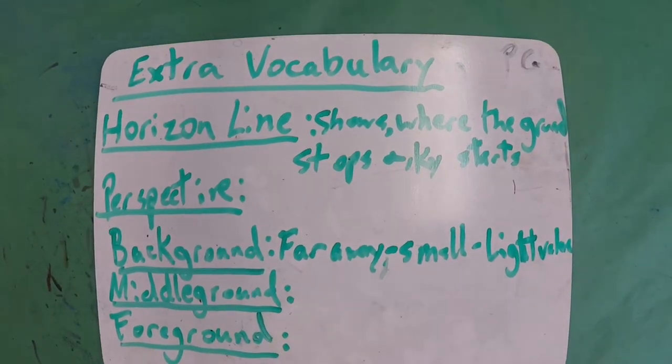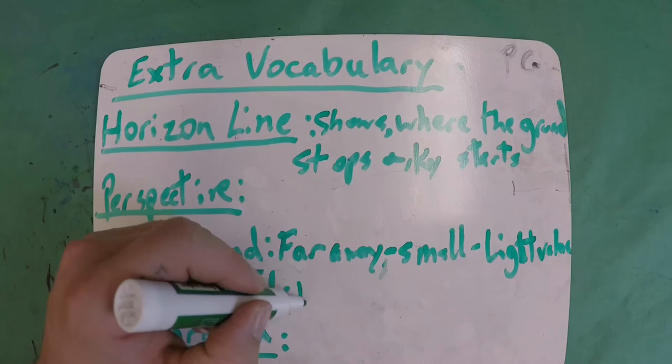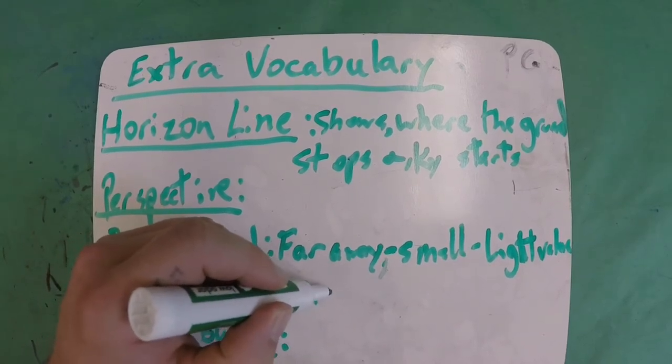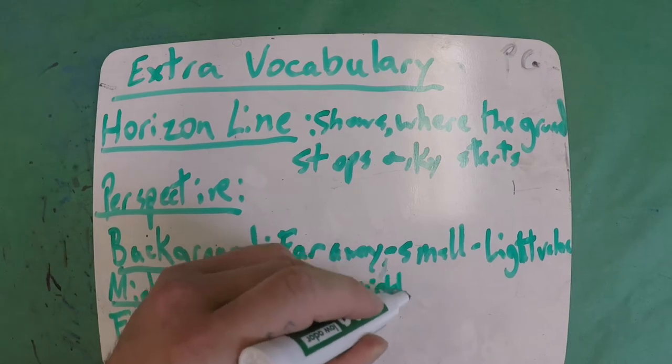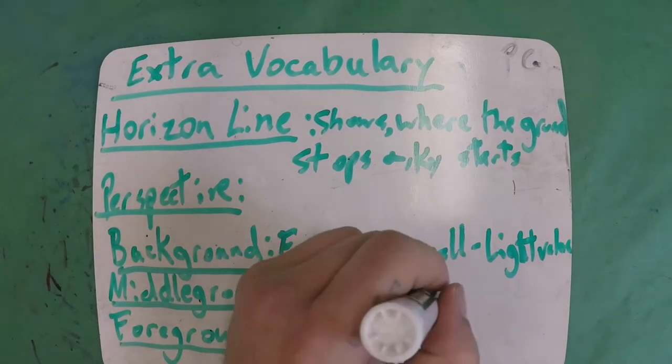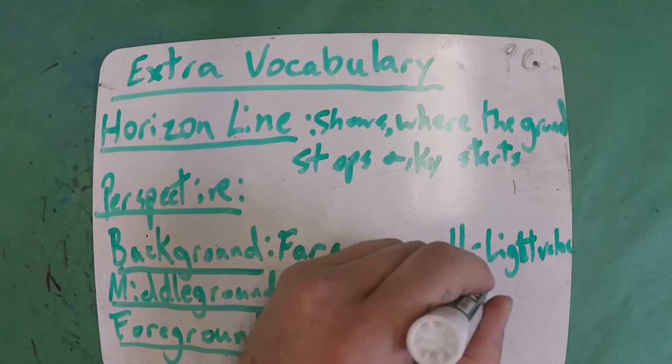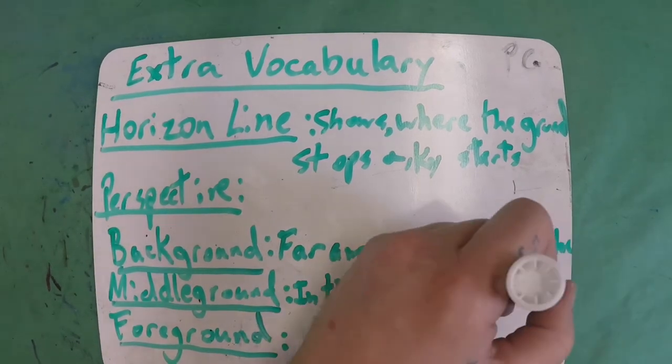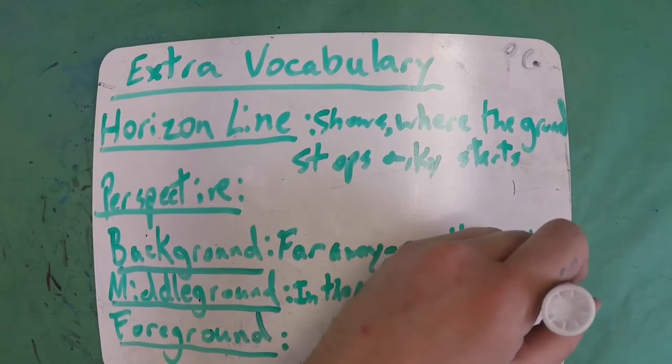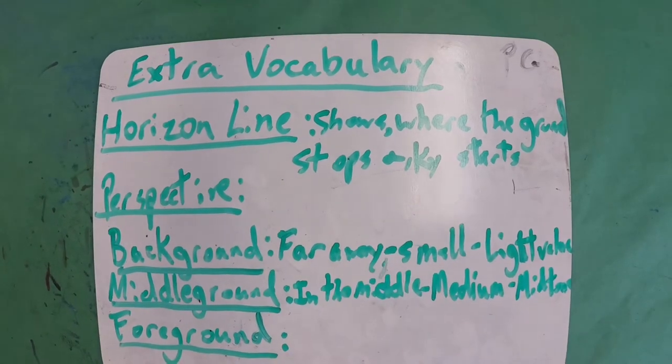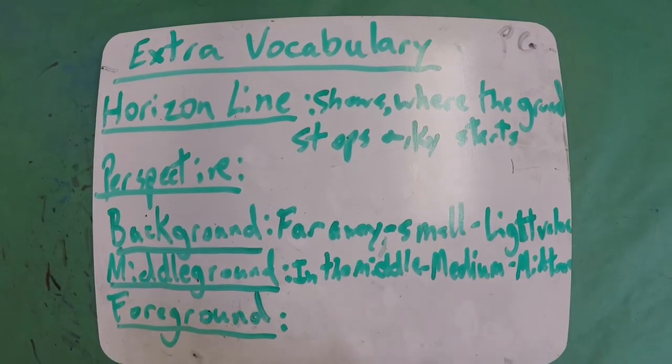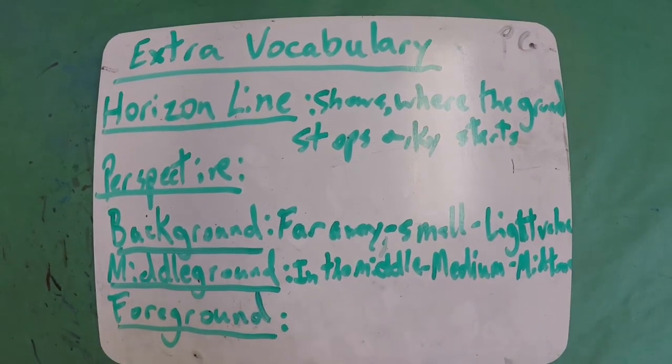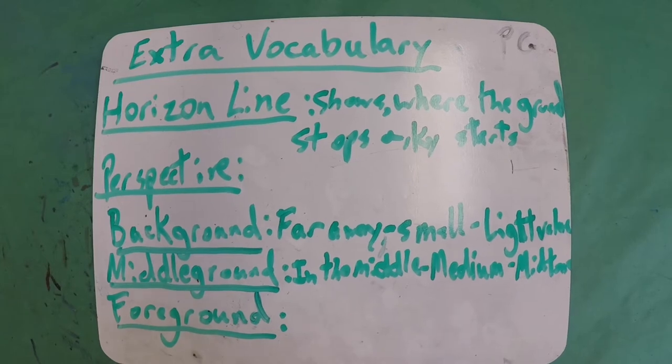Things in the middle ground are, as you may have guessed, in the middle. Because they're in the middle ground and they're in the middle, we make them, we draw them a medium size. And we use a mid-tone value. So a mid-tone value is kind of like just the normal pressure that you would color or draw with. Not too hard, not too light. Right in the middle, just right. It's that Goldilocks value.